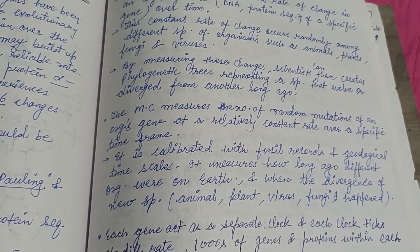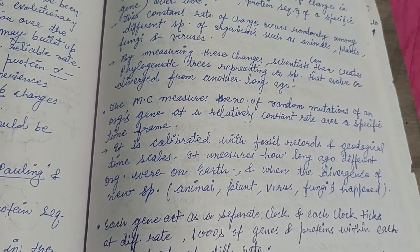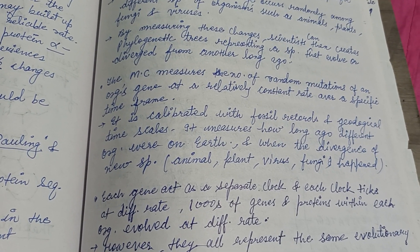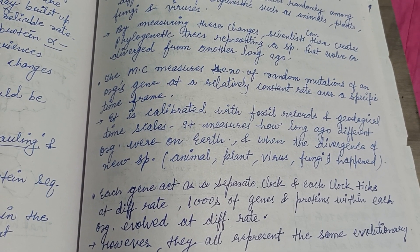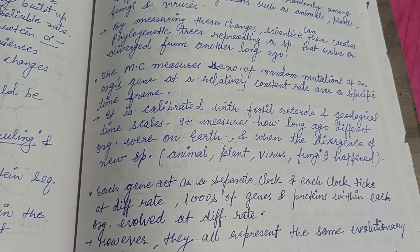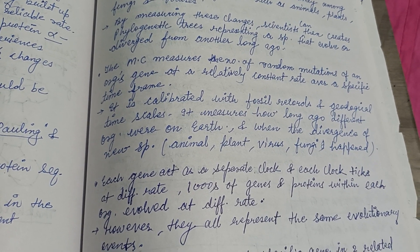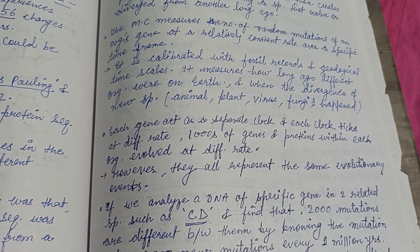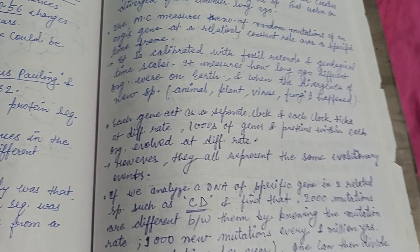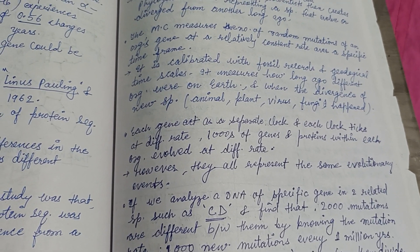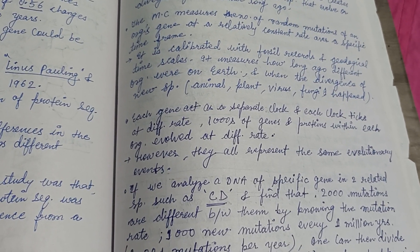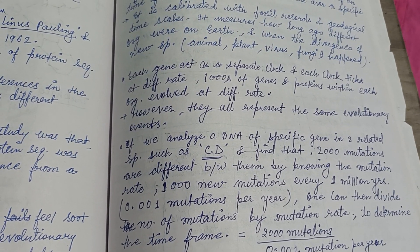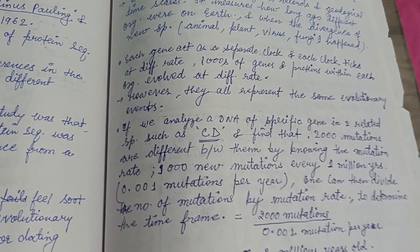By measuring these changes, scientists can create a phylogenetic tree representing species that evolved or diverged from one another long ago. A phylogenetic tree is also known as a dendrogram, as seen in previous videos. Each gene acts as a separate clock, and each clock ticks at a different rate — thousands of genes and proteins within each organism evolve at different rates.